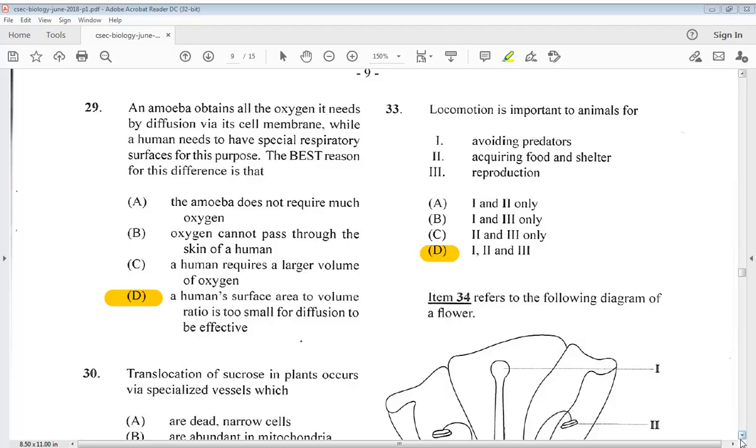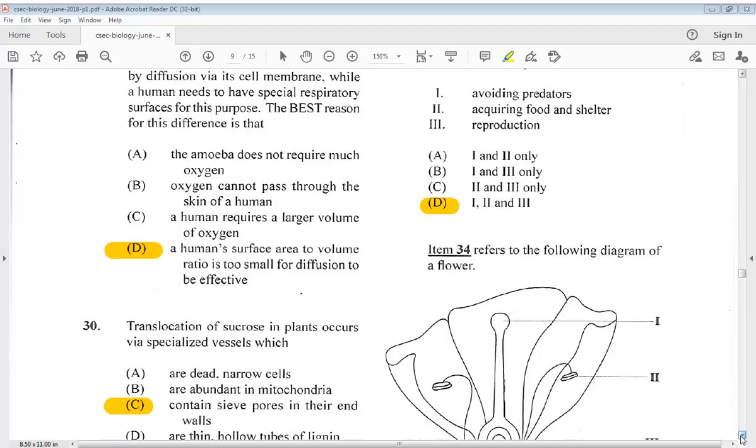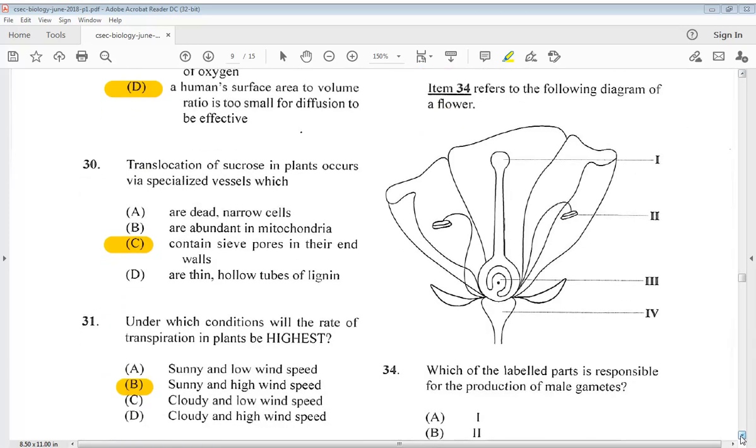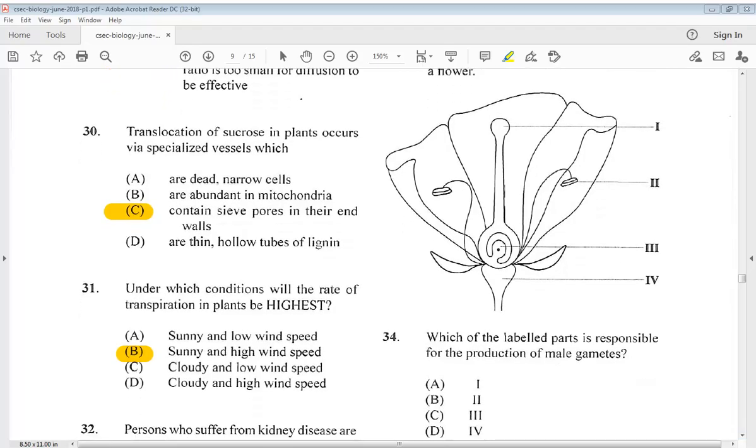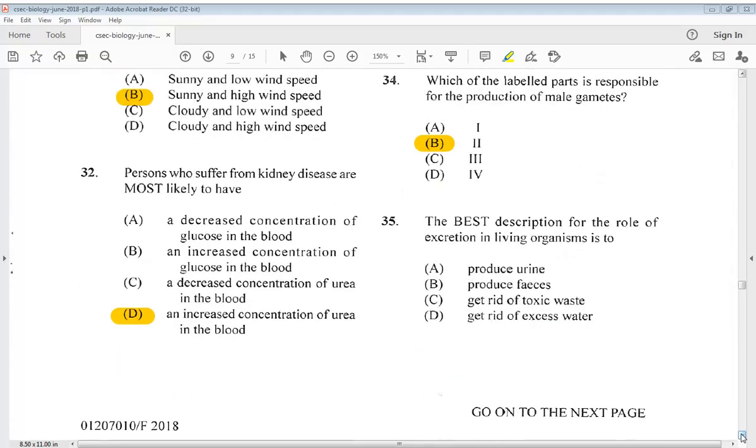Let's go to number 34. Item 34 refers to the following diagram of a flower and we have four parts. Which of the labeled parts is responsible for the production of male gametes? So the answer is actually at 2. B would be the answer. Let's go to number 35. The best description for the role of excretion in living organisms is: A. Produce urine. B. Produce feces. C. Get rid of toxic waste. D. Get rid of excess water. So the answer for 35 would be C, get rid of toxic waste.